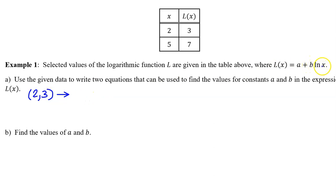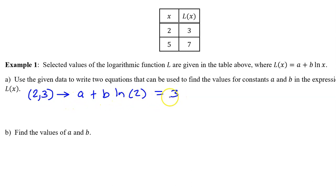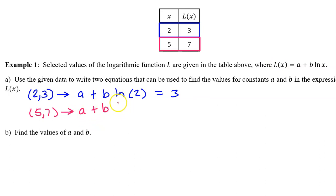When we plug in 2, we have the equation a plus b times the natural log of 2, and this should equal the output value, which is 3. So this is one equation. We can make another equation out of the input-output pair 5 comma 7. If we plug in 5 for x, we get 7 for the result: a plus b times the natural log of 5 equals 7. This is the second equation.